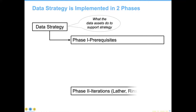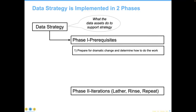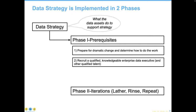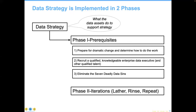We're going to come back to this after I go through these particular phases. The first is what the data assets do to support strategy. There are some prerequisites: prepare for dramatic change and determine how the work is going to be done; recruit a qualified, knowledgeable enterprise data executive staff and other talent; and then eliminate the seven deadly data sins. We'll take them in order.